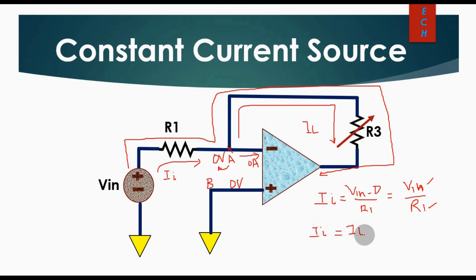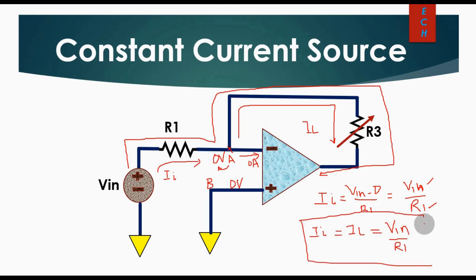So II equals IL, which equals VIN divided by R1. This is the final formula. Since II is fixed and constant, IL also remains constant even if you change the value of the load resistance. In a nutshell, by changing the load resistance, your load current will remain constant — that is how this circuit works as a constant current source.